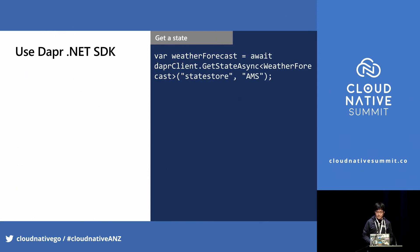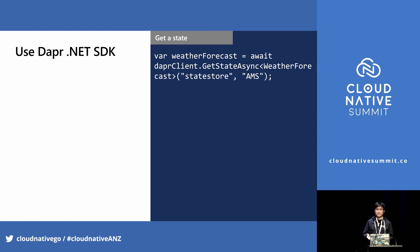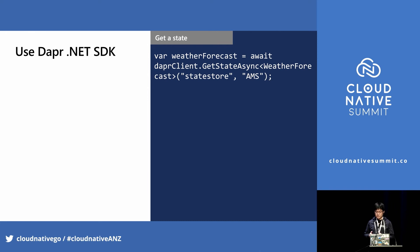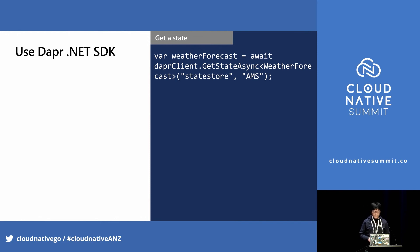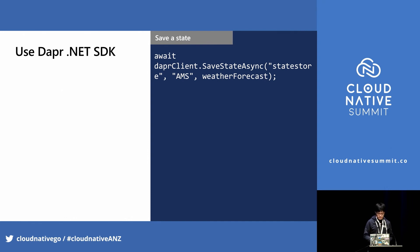Dapr also provides SDKs. You can call Dapr through the HTTP or gRPC API, but the SDKs simplify development. For example, if you want to get a state in .NET, you just create a Dapr client and call the GetStateAsync method. It doesn't matter which database is configured underneath — you don't need to install any SDK for DynamoDB. Just use the Dapr SDK.